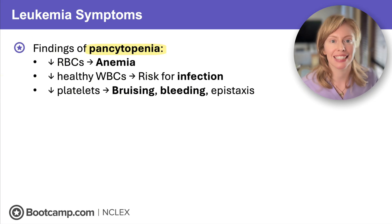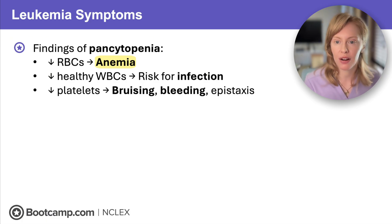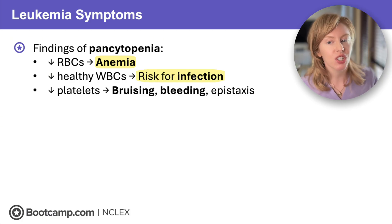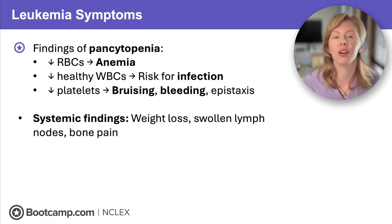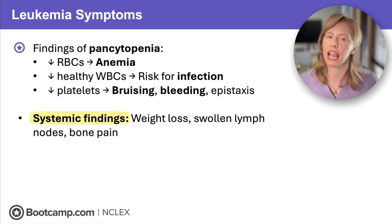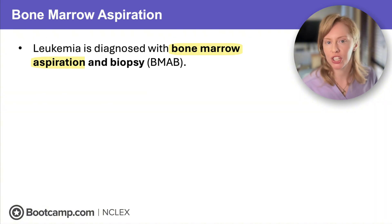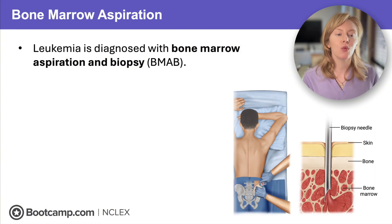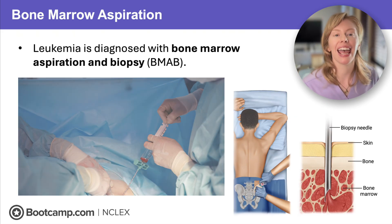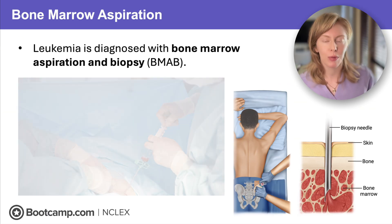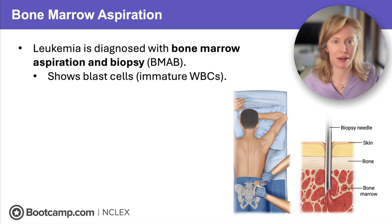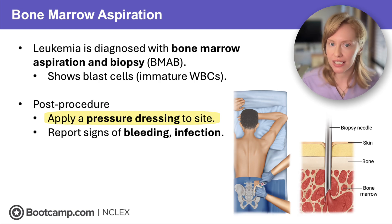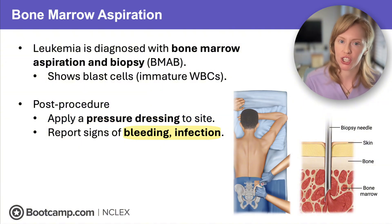Leukemia causes pancytopenia: low red blood cells create anemia, low healthy white blood cells put them at risk for infection, and low platelets cause bruising, bleeding, or epistaxis. Because this is a cancer, you'll also see systemic findings like weight loss, swollen lymph nodes, and bone pain. Leukemia is diagnosed using a bone marrow aspiration and biopsy, where a needle is injected into the bone marrow space — usually in the back of the pelvis — and the marrow is aspirated and studied to show blast cells. Because this is a vascular space and the client already has thrombocytopenia, they are at high risk for bleeding after the procedure, so apply a pressure dressing and report any signs of bleeding or infection.